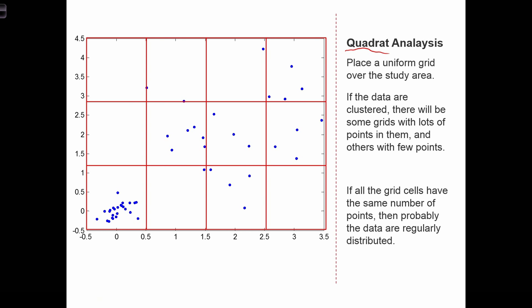With quadrat analysis, we place a uniform grid over the study area. So in red, we've placed our grid. Each cell of this grid is going to be called a quadrat, kind of like the word quadrant.